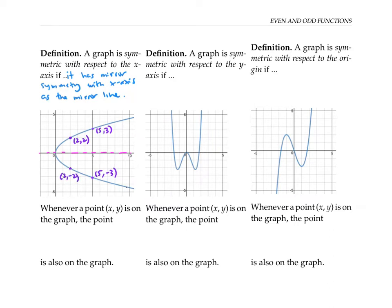For any point (x, y) on a graph, its mirror image when you flip over the x-axis will have coordinates with the same x coordinate and the opposite of the y coordinate. Therefore we can say that a graph is symmetric with respect to the x-axis if whenever a point (x, y) is on the graph, the point (x, -y) is also on the graph.